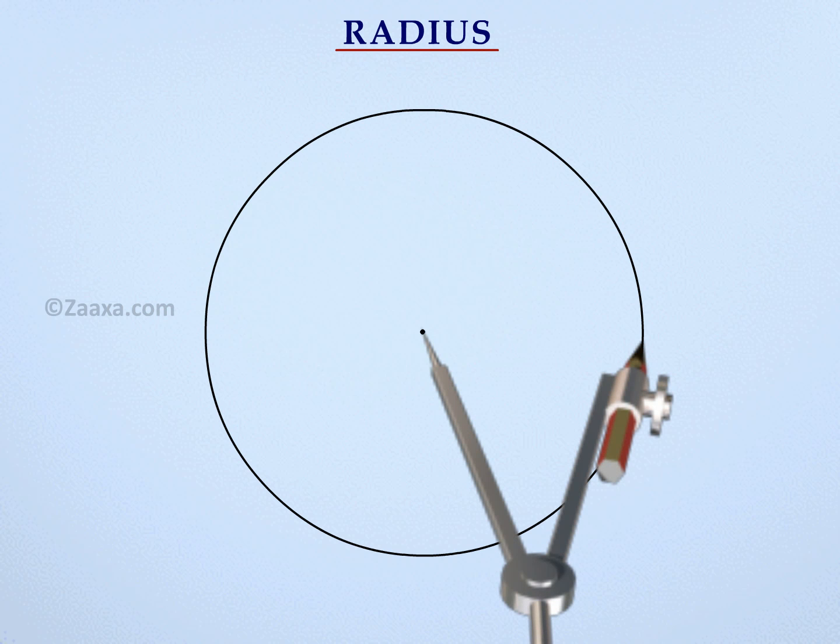The distance between the pencil and the sharp metallic tip is the radius of the circle. The radius of the circle we just drew is thus 5 cm.